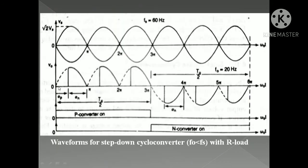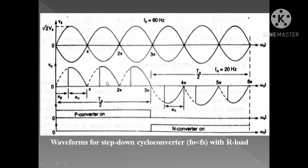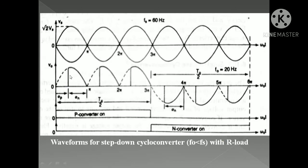In one response we can see that for two positive and one negative alternations, we keep triggering the P converter only — that means the P converter is working from zero to three pi. At the firing angle alpha, P1 P2 are triggered, then P3 P4 are triggered, following the positive supply voltage at the load. After three pi up to six pi, we trigger the N converter: N1 N2 is triggered applying negative voltage across the load, then N3 N4, then N1 N2 again.